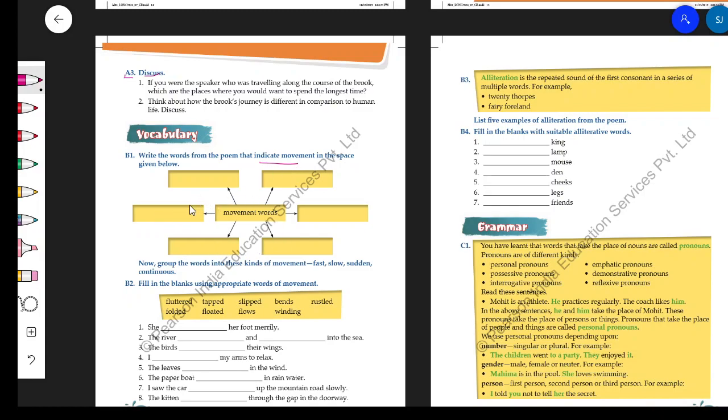So, we have got six boxes here and we have to put different movement-indicating words in these. And further, we have to categorize these words on the basis of fast and slow and then sudden and continuous. So that is one task that you have to do on your own.